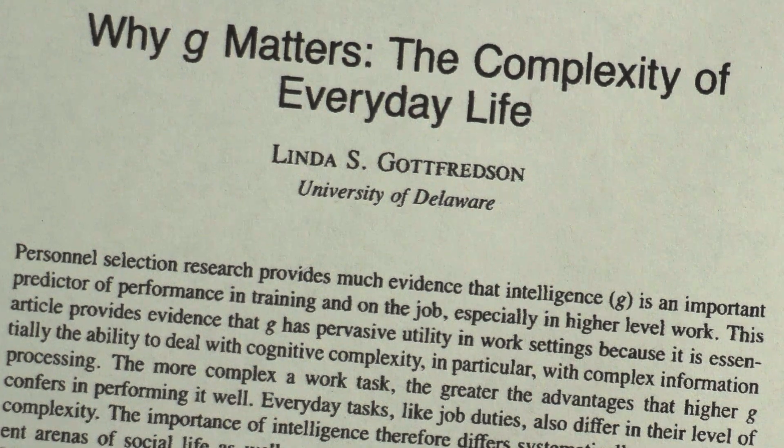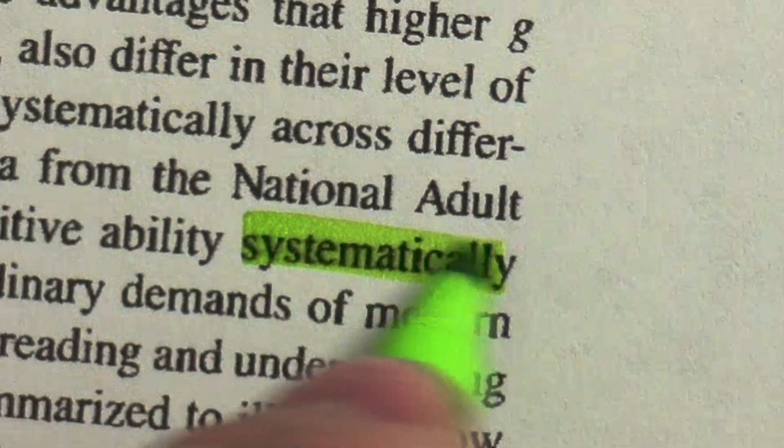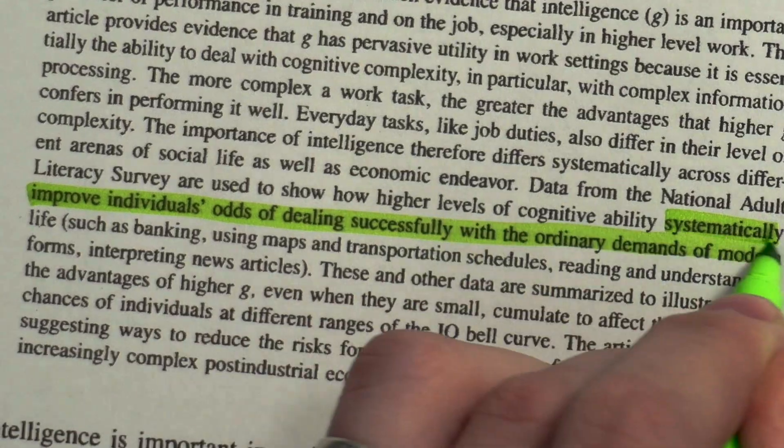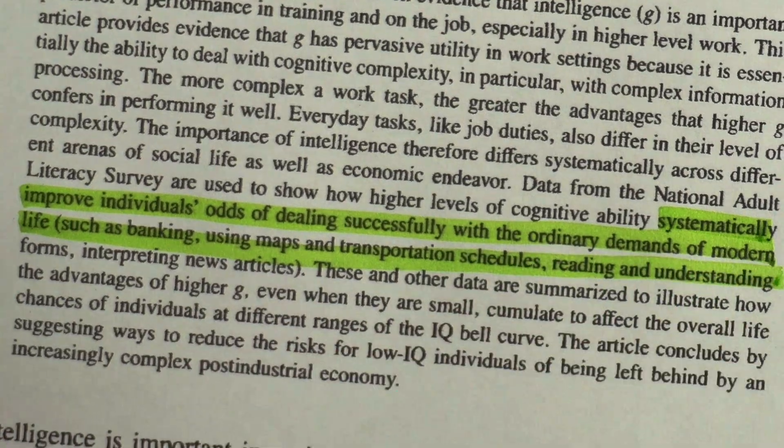So, with the Flynn Effect and the fact that school increases IQ, we can determine that IQ is not an accurate indicator of natural intelligence — but that doesn't mean IQ is a useless measure. Higher IQ is correlated with better grades, career success, and as stated in a study called Why G Matters, systematically improves individuals' odds of dealing successfully with the ordinary demands of modern life. So we can safely say that a society with a higher average IQ is more desirable, and therefore we should try to understand why rich children have higher IQs than poor children.